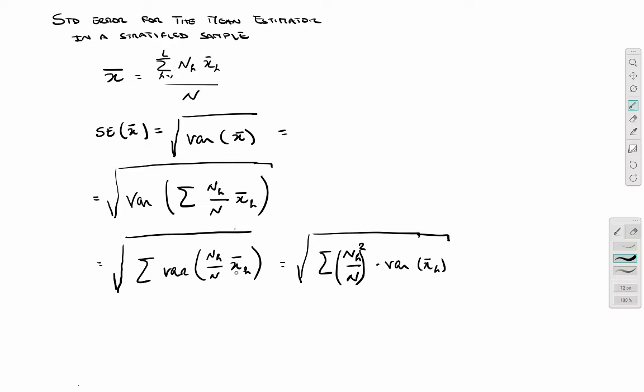Again, the variance of a constant times the random variable is just the constant squared times the variance of the random variable. So that's what I've done here.